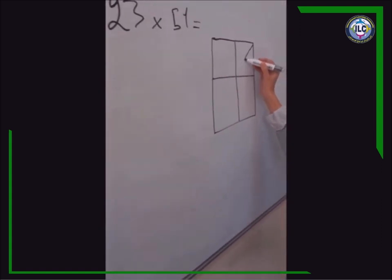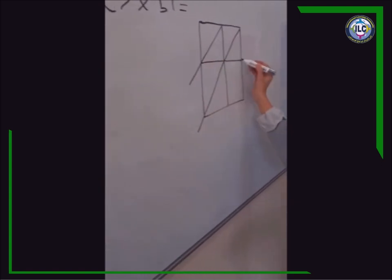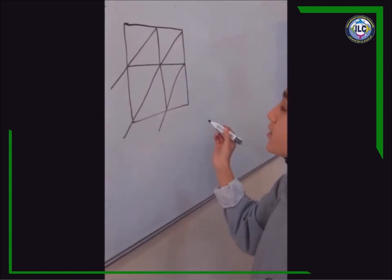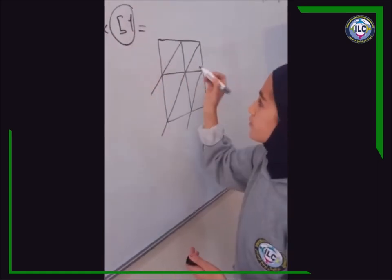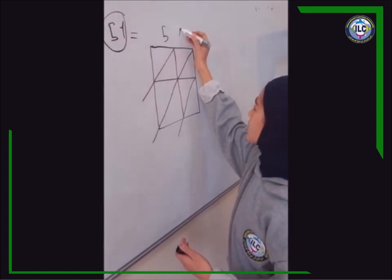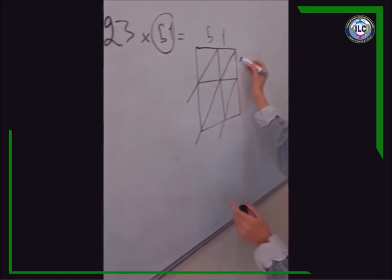Then, draw slanted lines between the boxes. The greater number is 51, so we draw 51 and 23 here.